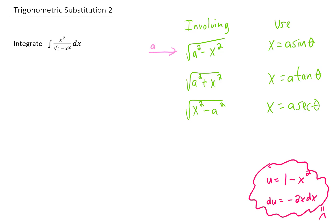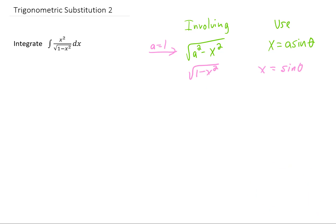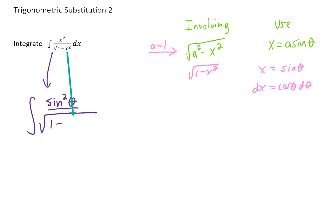This integral has the first form with a equals 1, so our trig substitution is going to be x equals sine of theta. That makes dx equal to cosine of theta d theta. The numerator has x squared, and since x is sine of theta, x squared becomes sine squared theta. The denominator has 1 minus x squared, which turns into 1 minus sine squared theta. And don't forget your dx — cosine of theta d theta.